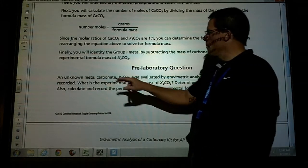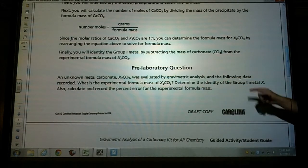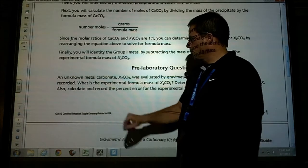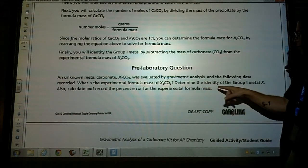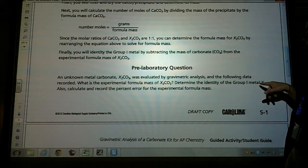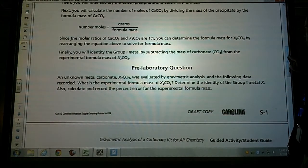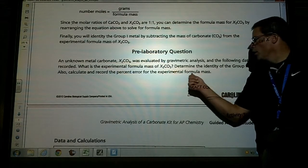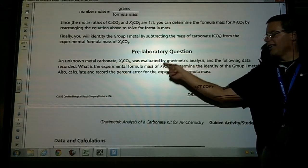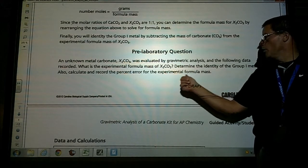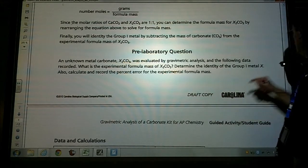Here's the pre-laboratory question. An unknown metal carbonate was evaluated by gravimetric analysis in the following data recorded. What is the experimental formula mass of this compound, and determine the identity of the group 1 metal, which is known as X. Also calculate and record the percent error of the experimental formula mass. Formula mass, since we don't know what this compound is, it's kind of like the molecular mass, but once we know the formula we can determine it. In other words, it's the mass per mole, just another way of saying molecular mass.